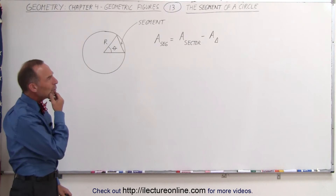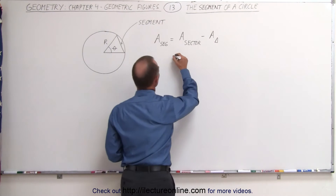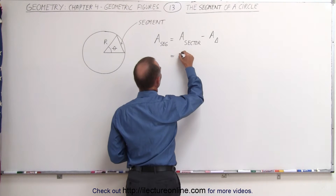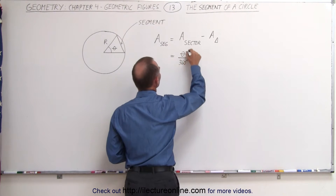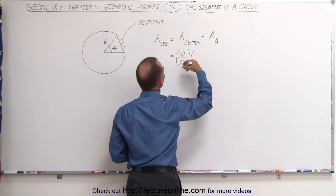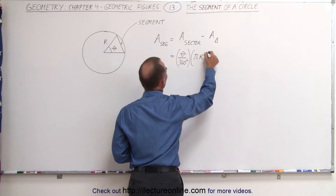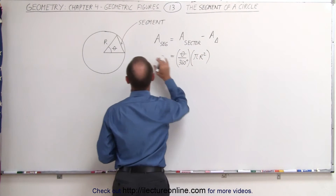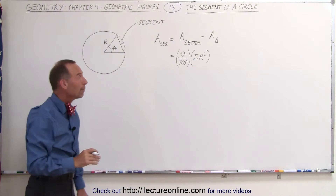We already know how to find the area of the sector — that is equal to the angle theta divided by 360 degrees, times the area of the whole circle which is pi r squared. This is the area of the entire sector, as we saw in the previous video.